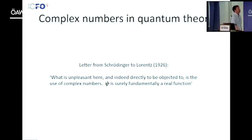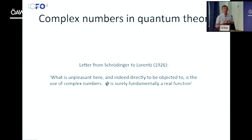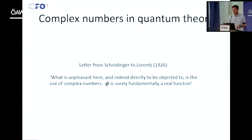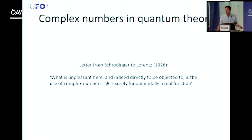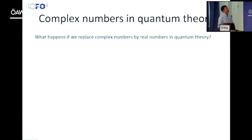This is not new. There was a letter from Schrödinger to Lorentz where he had problems with this, because he hoped that the wave function would at the very end be a real function, not complex. This is our motivation: we want to understand if Schrödinger was right, or whether we have to live with complex numbers. This is the question I want to answer.